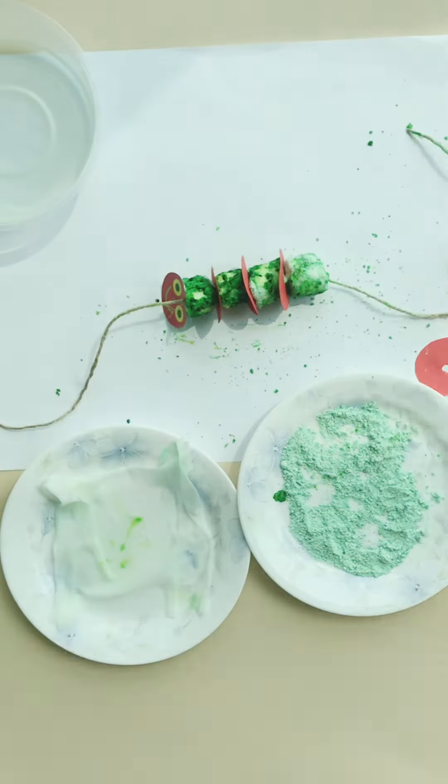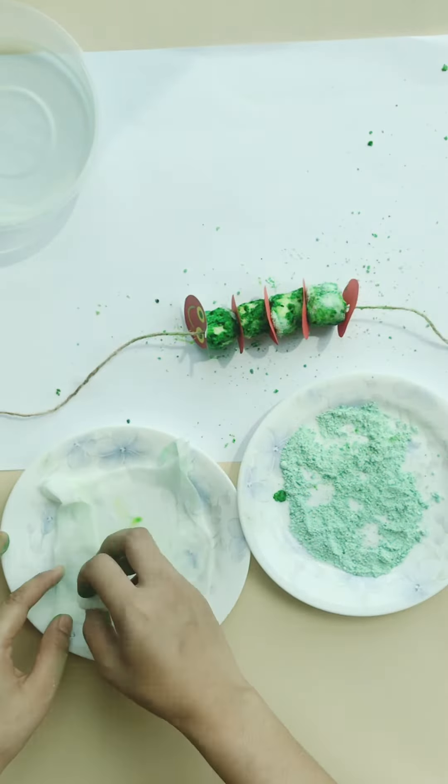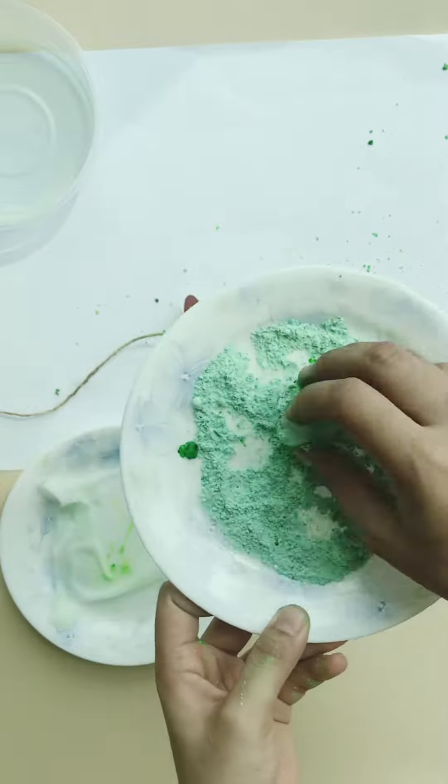This month's activity's aim is to learn about number 5, so you can ask your child to count the red circles and the green cotton balls and count to 5.